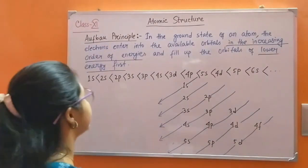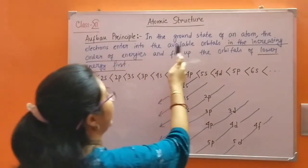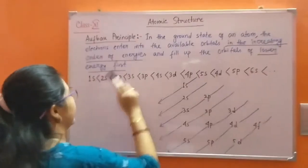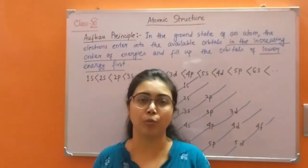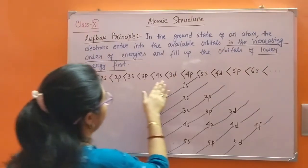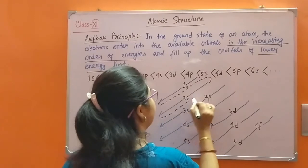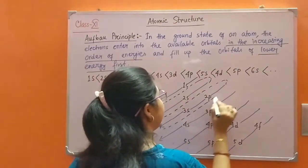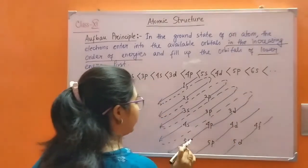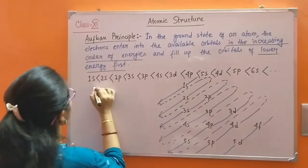The next topic is the Aufbau principle. According to this principle, in the ground state of an atom, the electrons enter the available orbitals in the increasing order of energies and fill the orbitals of lower energy first. The energy order is: 1s, 2s, 2p, 3s, 3p, 4s, 3d, 4p, 5s — filling of orbitals occurs in this way. One important rule here is the n plus l rule.